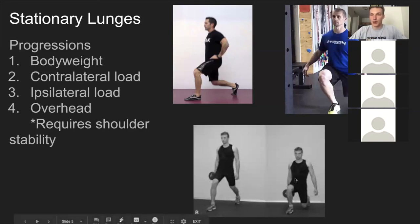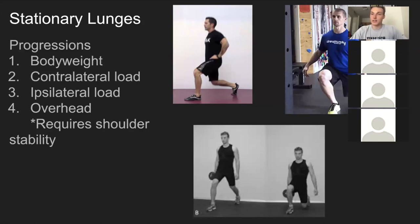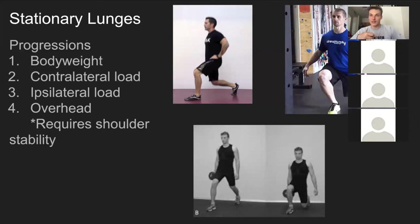The contralateral loading pattern is the most functional, because it mirrors the loading pattern our body experiences during gait cycle — running, sprinting, walking. This is the loading pattern we encounter naturally, which is why contralateral loading is so important in this progression.